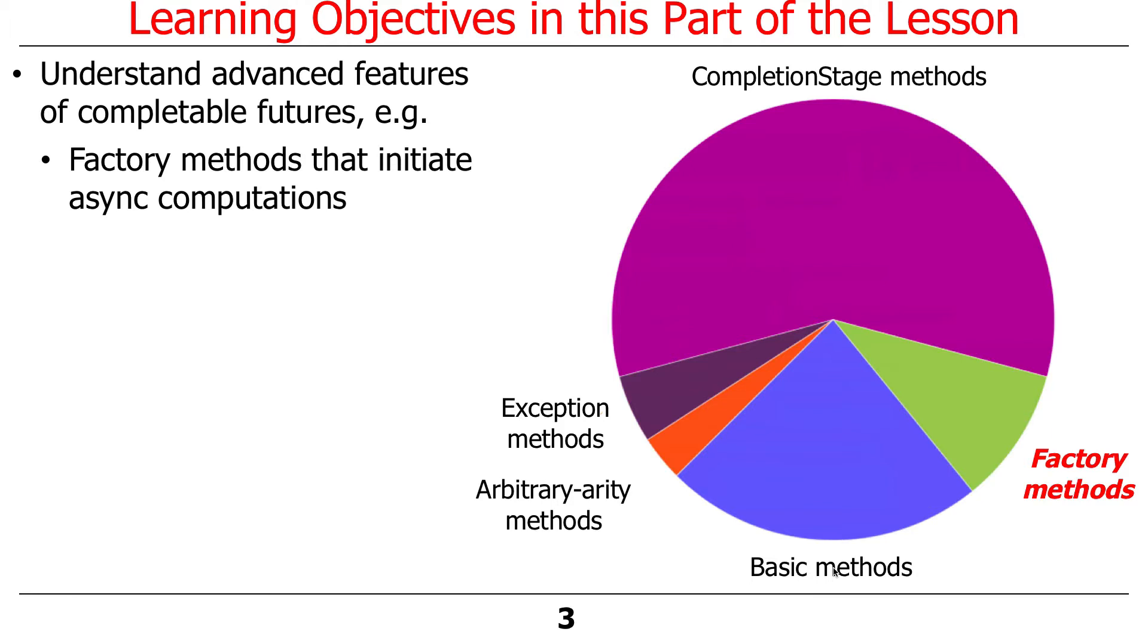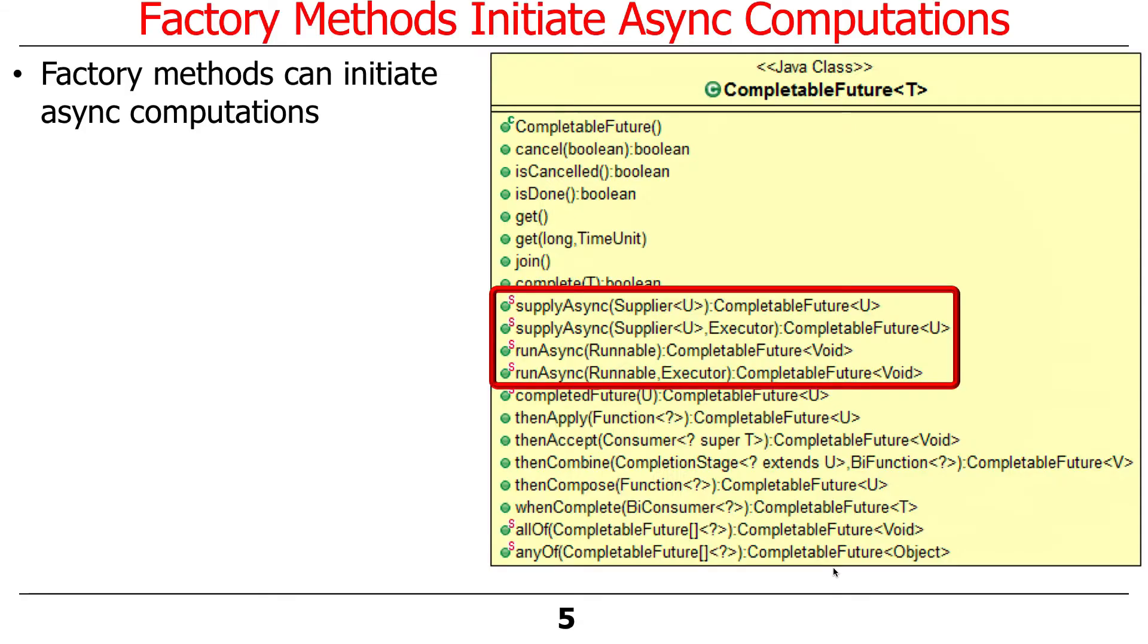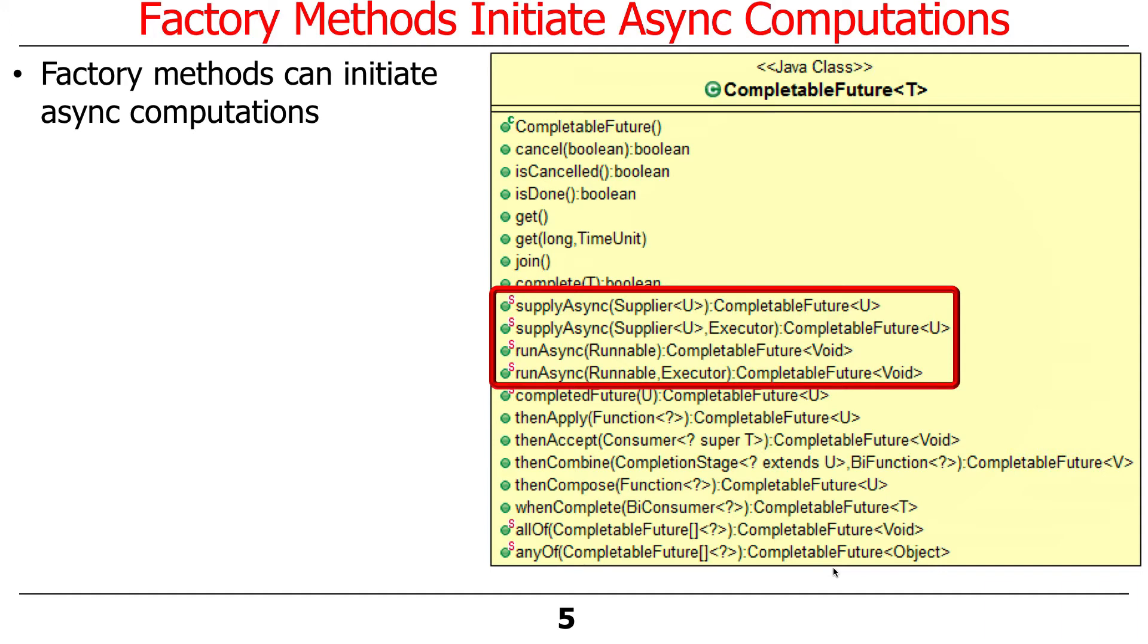We'll start talking about factory methods, which, as you can see, are a pretty small part of the whole thing. And we'll talk about what they do. What they do is they initiate asynchronous computations. That's what the factory methods do. There are four of them, and they're used to start these computations.